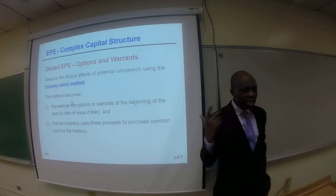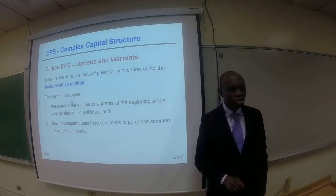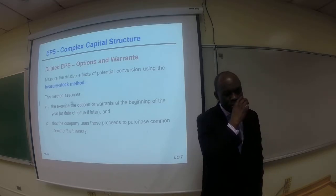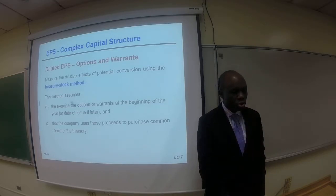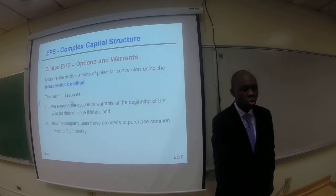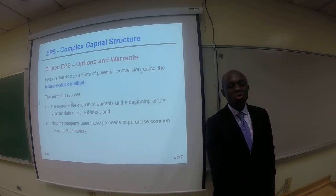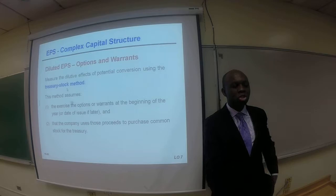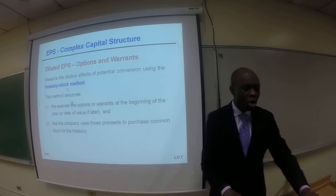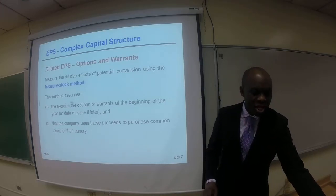This is even more exciting than the last few presentations relative to complex capital structure. So let's take a look at how this works. We measure the diluted effect of potential conversion using the treasury stock method. How did they come up with this name — treasury stock method?